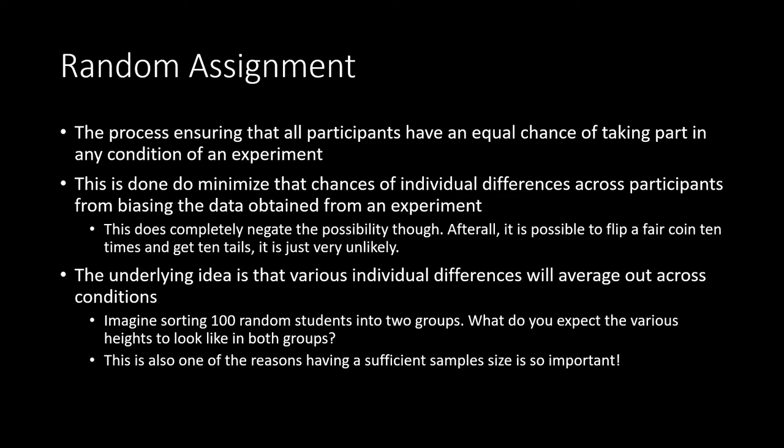The underlying idea is that various individual differences, which will always exist, will average out across conditions. A good way to picture this is to imagine sorting 100 random college students into two groups — you would expect roughly equal numbers of tall and short people in both groups, and if you averaged them, you'd get two average heights that are relatively close together. This is one of the main reasons why it is so important to have samples of sufficient size. If you were only sorting four people into two groups, you might see much larger effects of individual differences. Whereas if you have a hundred people in either group, the effect of a single outlier — someone who is seven and a half feet tall — is much less pronounced.